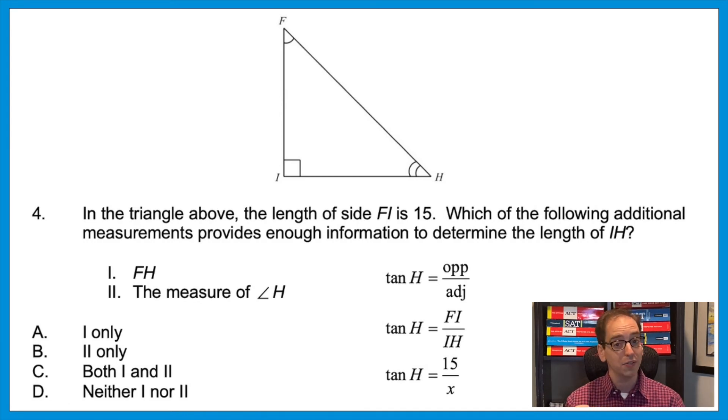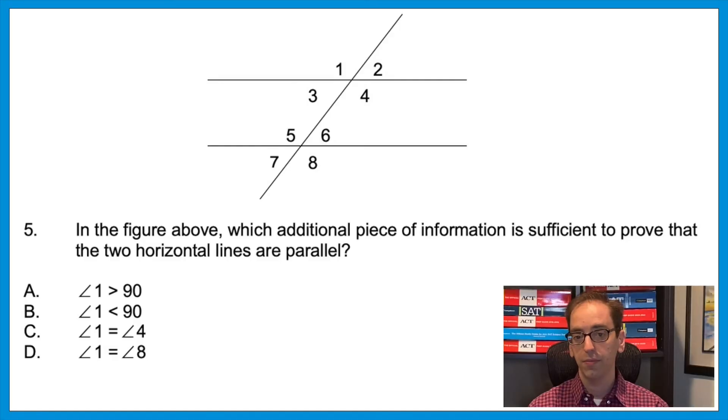Let's try one more. Question 5: In the figure above, which additional piece of information is sufficient to prove that the two horizontal lines are parallel? This one relates to that question we saw a few minutes ago with parallel lines and a transversal. So I'll give you a minute—press pause, give it a try.